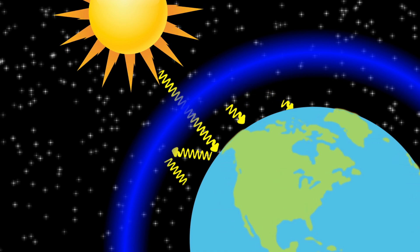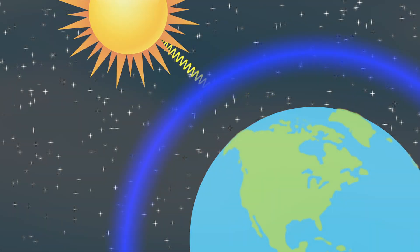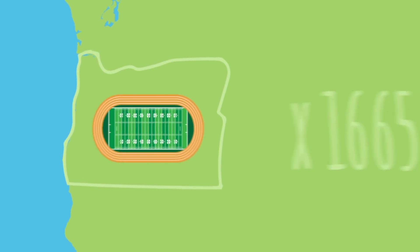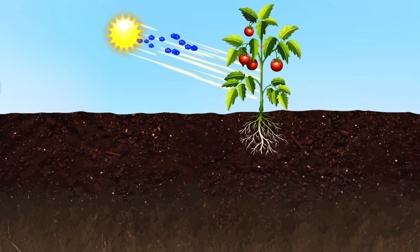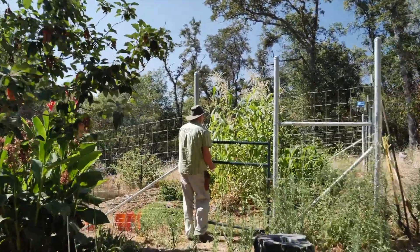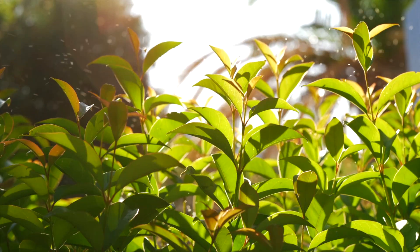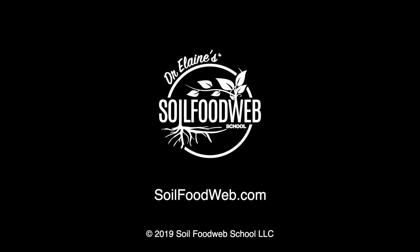Another threat to life on earth is climate change. Fortunately, the soil is capable of holding tremendous amounts of carbon in the bodies of microorganisms and some larger organisms too. The biggest living organism in the world is not a whale — it's a fungus found in Oregon the size of 1,665 football fields, between two thousand and eight thousand years old, and made mostly of carbon. By restoring the soil food web, we could help put a stop to climate change. At the Soil Food Web School, we train people to help farmers transition away from chemicals to farming in harmony with nature. Visit soilfoodweb.com for more information.